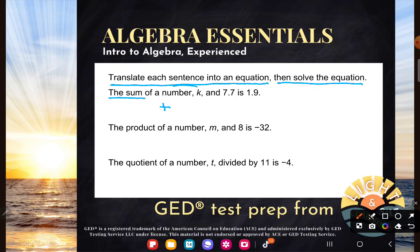The sum of a number K and 7.7. So a number K and 7.7. There we go. Got that first part. Now this part is 1.9. If it is something, that's another way of saying it's equal to that thing.